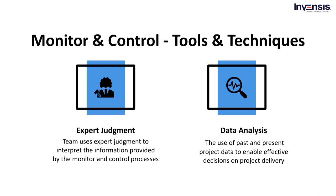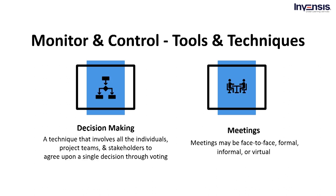The next technique of the monitor and control process is decision-making. The decision-making method requires all individuals, project management teams, and stakeholders to agree on a single decision throughout the voting process. This means that the project can be run within a project management framework, including members of the project team, stakeholders, and other members involved in the ongoing project. The main agenda is to disseminate information about the project and to ensure that expectations are met.